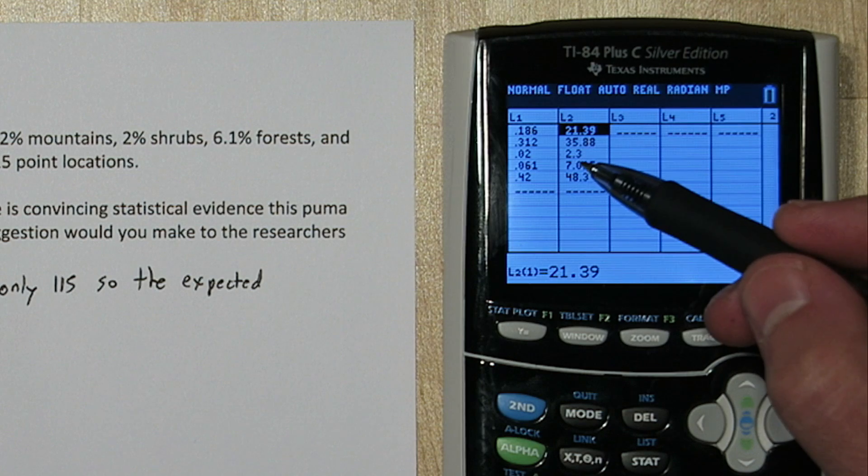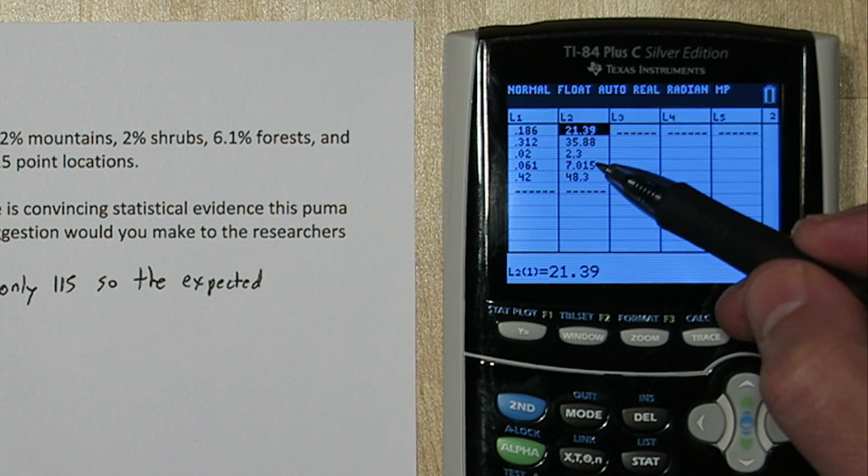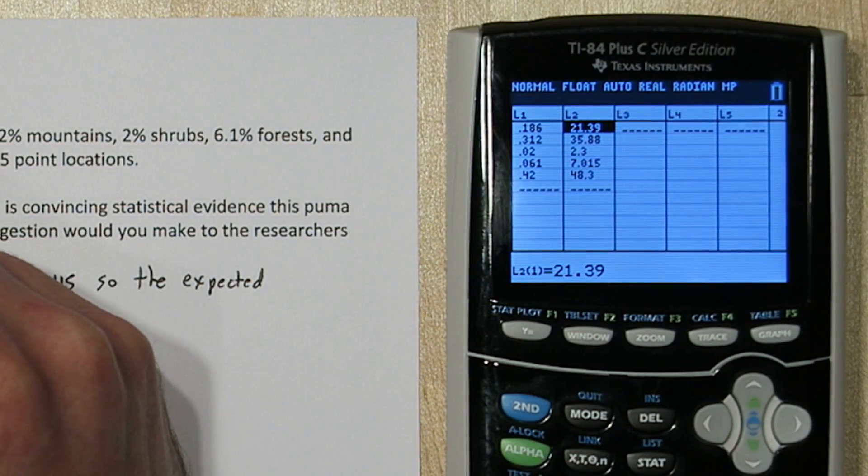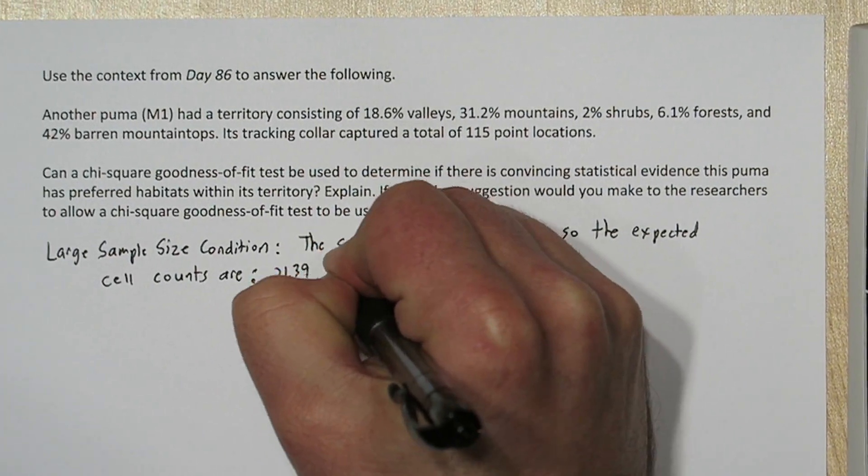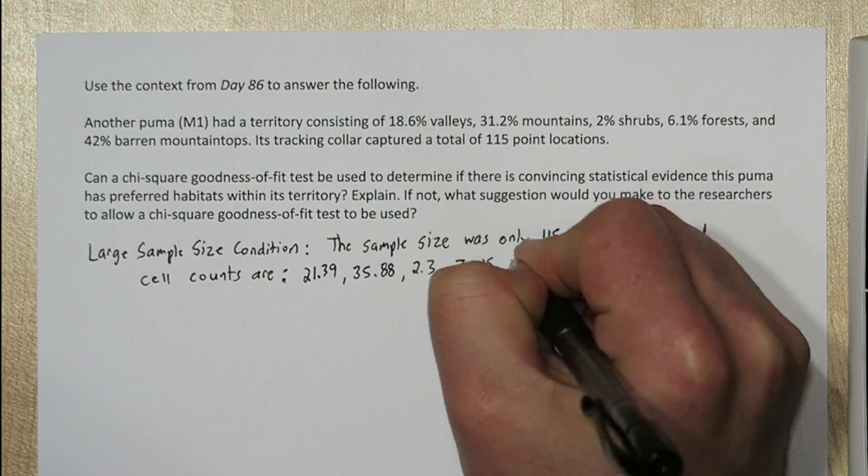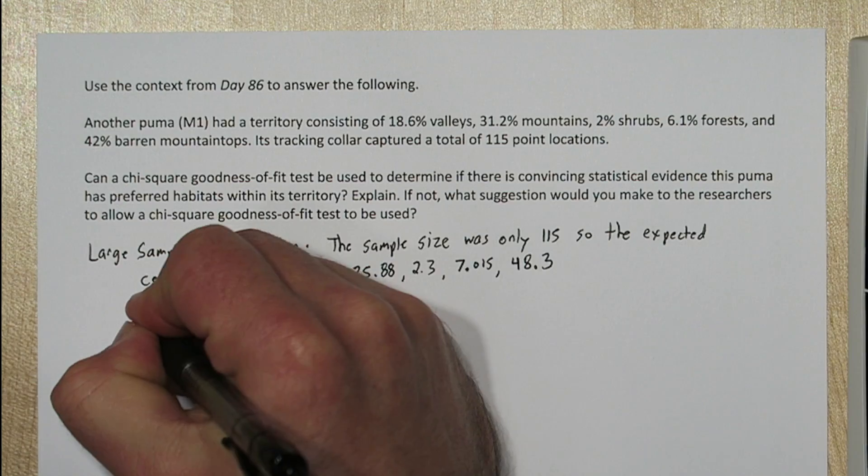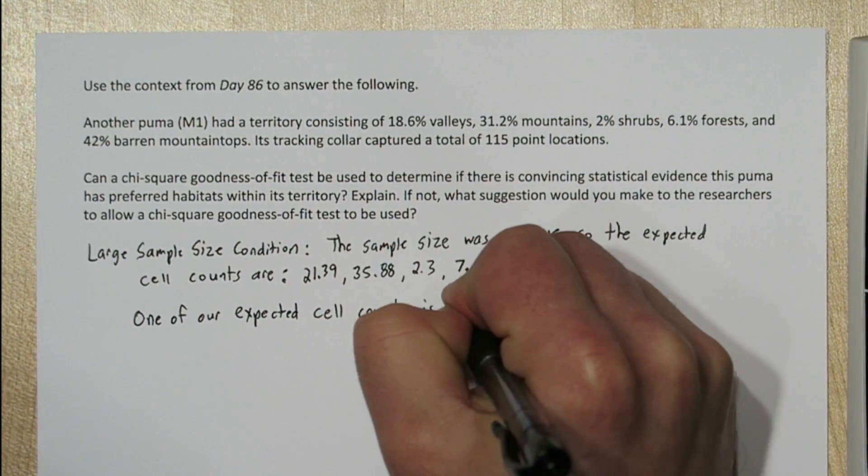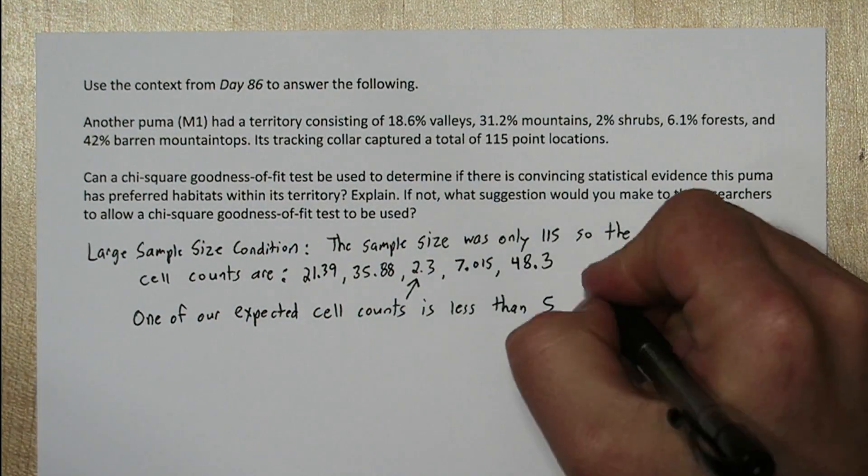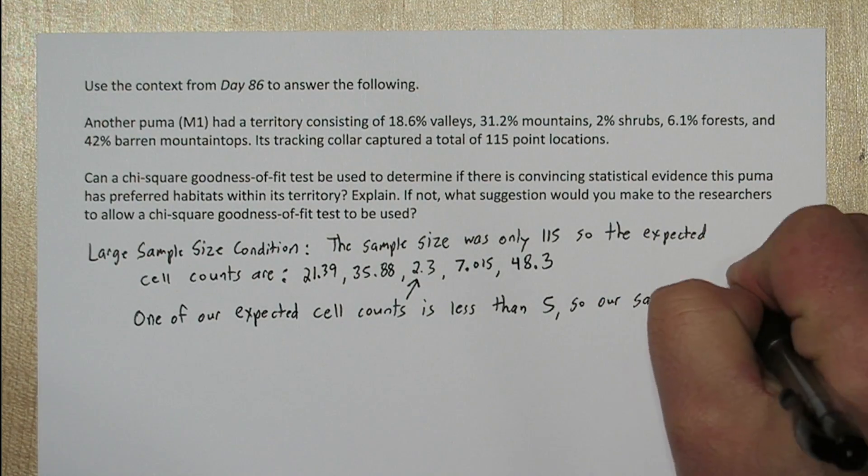So here's all of our expected cell counts, and that 2.3 is a problem. It's not 5. We need all our expected cell counts to be at least 5. So one of our expected cell counts is less than 5, so our sample is not large enough.